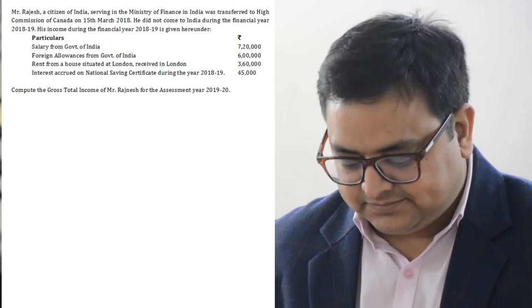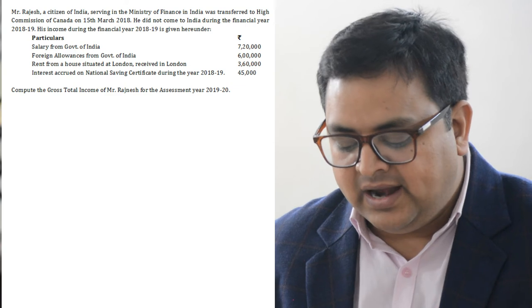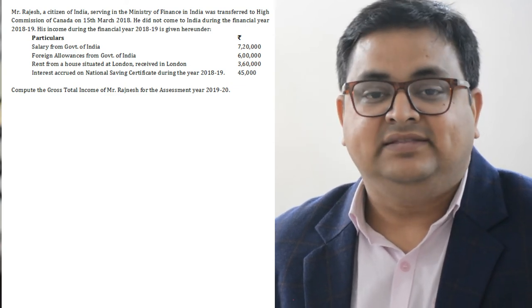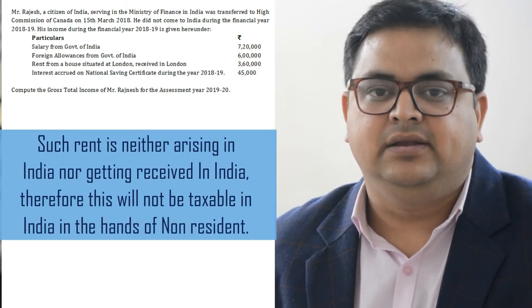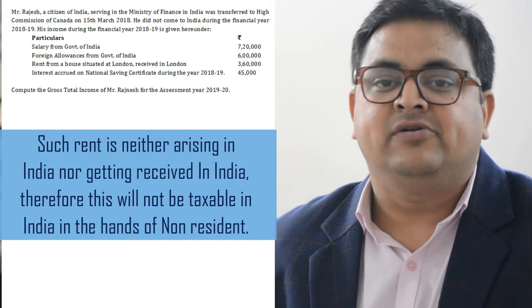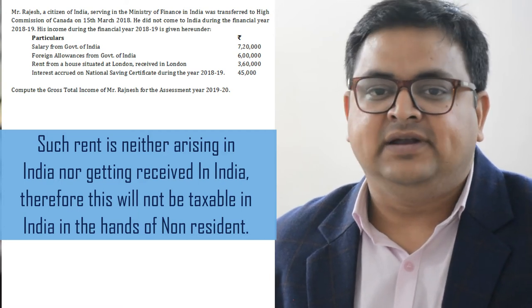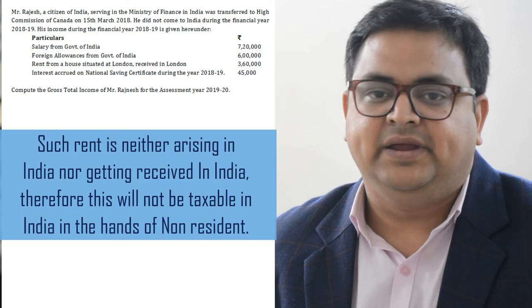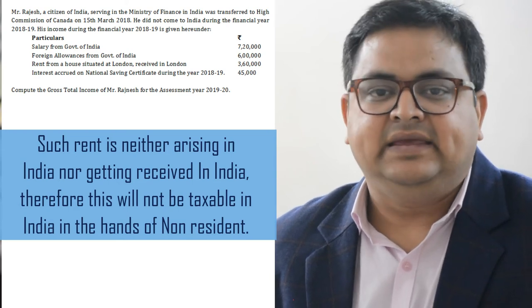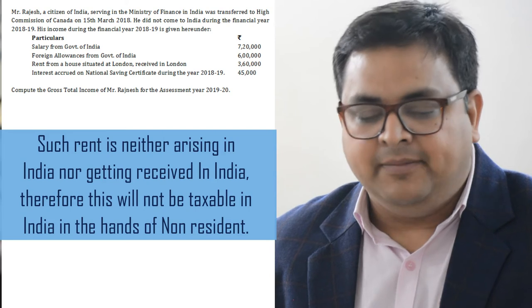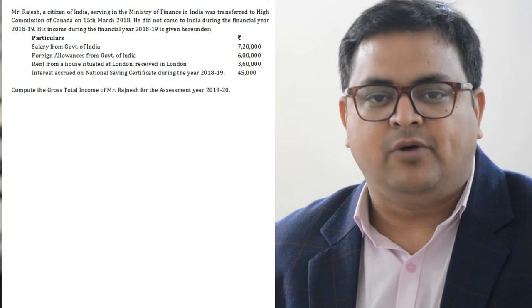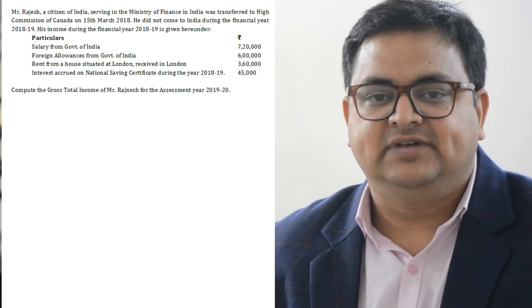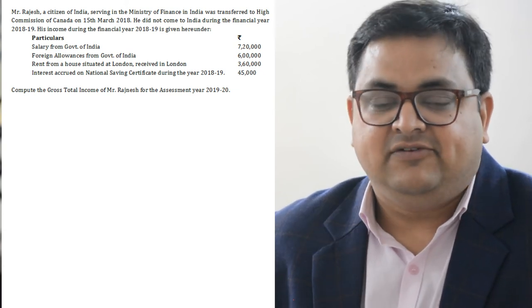Third point says: rent from a house situated in London, received in London. Yani ki this income is not arising in India, because the house is situated in London, and the income is also not received in India. Therefore, a non-resident is not required to pay tax on such income, so yeh income in ke liye exempt hogi. Hume question ne poocha hai ki in ki total income kitni hai, toh we will show under head house property, but we will say that there is no income from such house property, as it is neither arising nor being received in India.